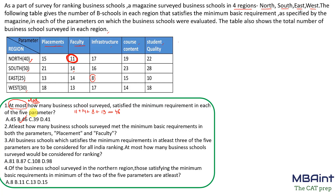The second question asks: at least how many business schools surveyed met the minimum basic requirements in both placement and faculty? We're focusing on just those two parameters. When 'at least' is used, we need to find the minimum. So we need to find the minimum number of schools which satisfy both placement and faculty.